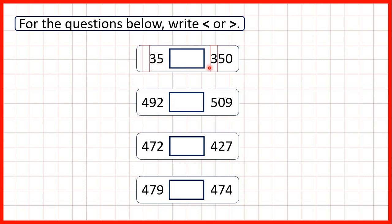Because 350 has three hundreds and 35 doesn't have any hundreds, we know that 35 must be less than 350, so we need the symbol for less than. The way to remember this symbol is that we can imagine this is a kind of point and it always points to the smaller number. Another way of thinking about this symbol is to imagine it's like the mouth of a crocodile or an alligator, and the crocodile snaps at the larger number, so its mouth points towards the number that's larger.